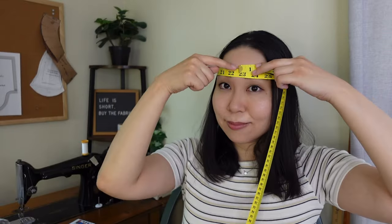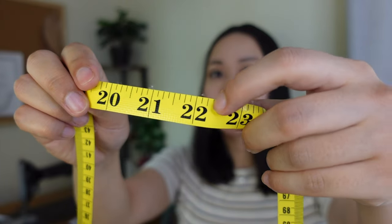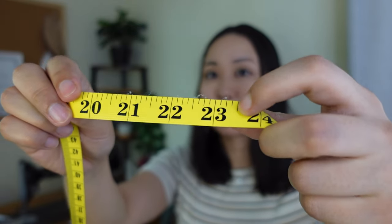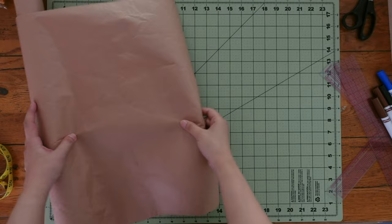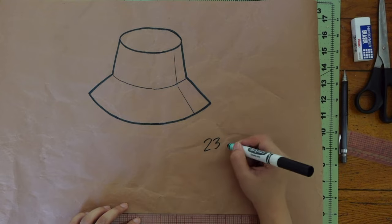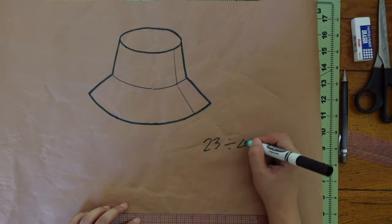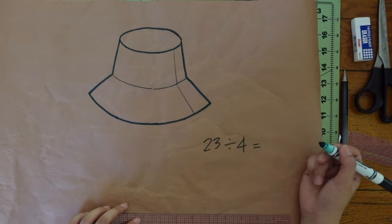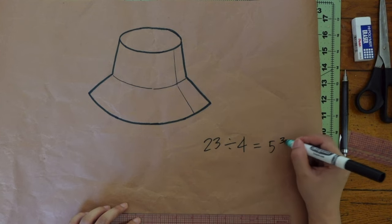First, I measured my head circumference. Add half inch to one inch for the fabric thickness and wearing ease. In order to make the calculation easier, I'll use 23 inches for the finished hat measurement. Divide 23 by 4 and you get 5 and 3 quarters.